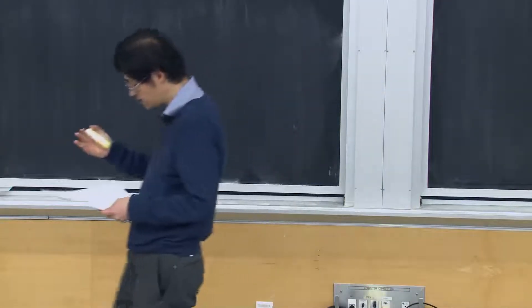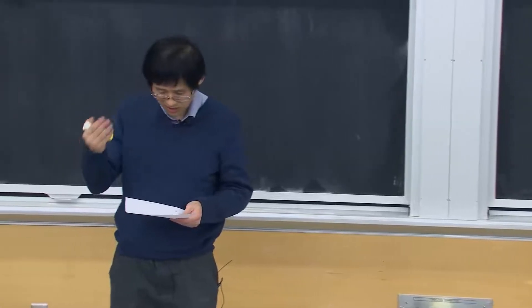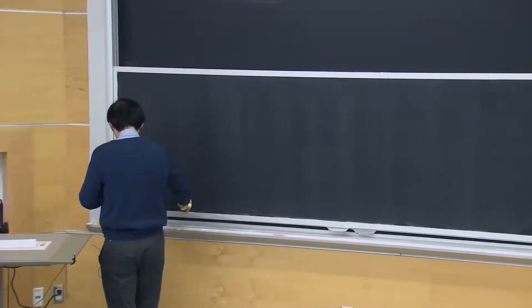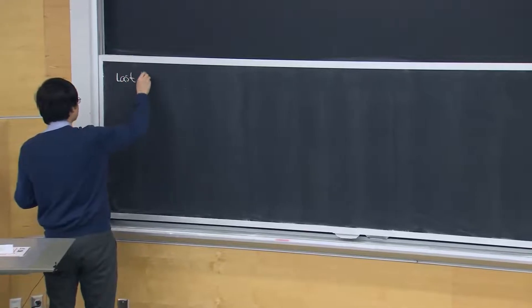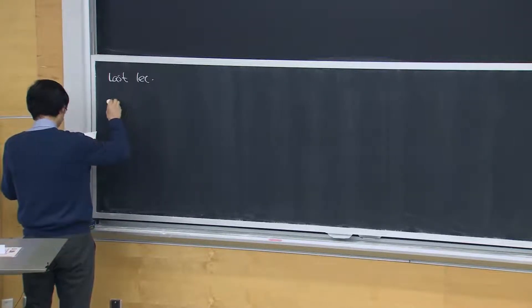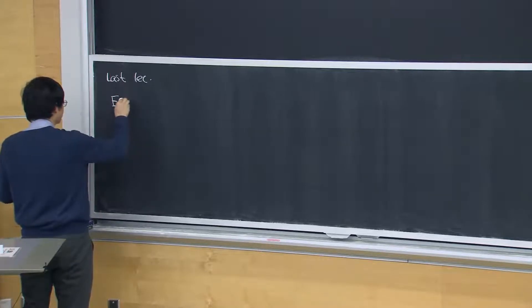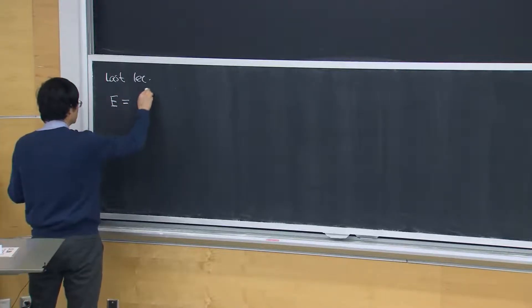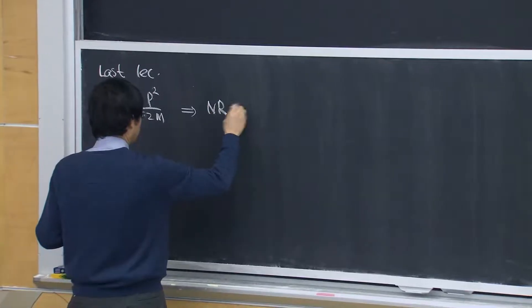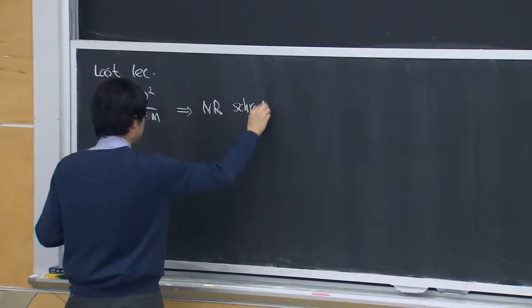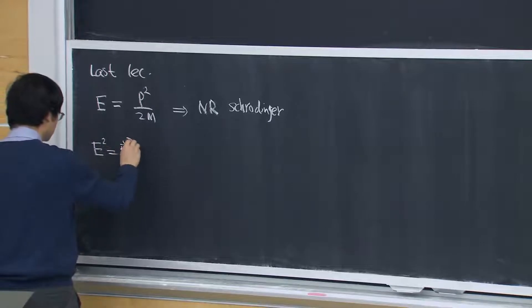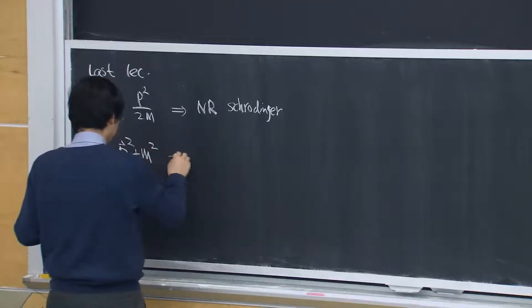The most immediate idea is what's called relativistic quantum mechanics. The most immediate generalization of the Schrödinger equation: if you have E equal to p-squared divided by 2m, you get the Schrödinger equation. Now if you have E-squared equal to p-squared plus m-squared for a relativistic particle, you get what's called the Klein-Gordon equation.